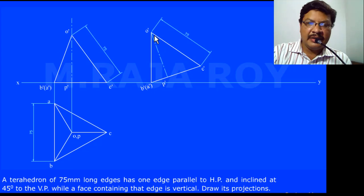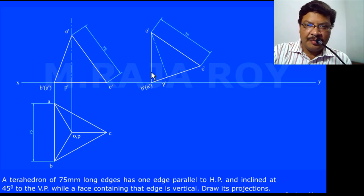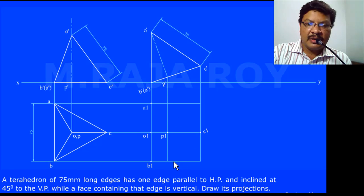To reconstruct the figure, take this length and mark it in the vertical direction. Then take B' and A' as center with their respective lengths as radius and draw arcs. Take O' as center, draw another arc, and you will automatically get point C'. This reconstruction is complete. Then from the front view draw the projectors, and from the top view draw the locus lines. You will get the intersection points forming the second top view.